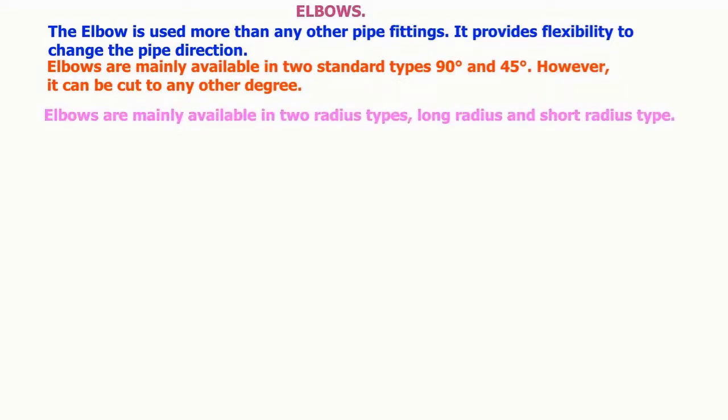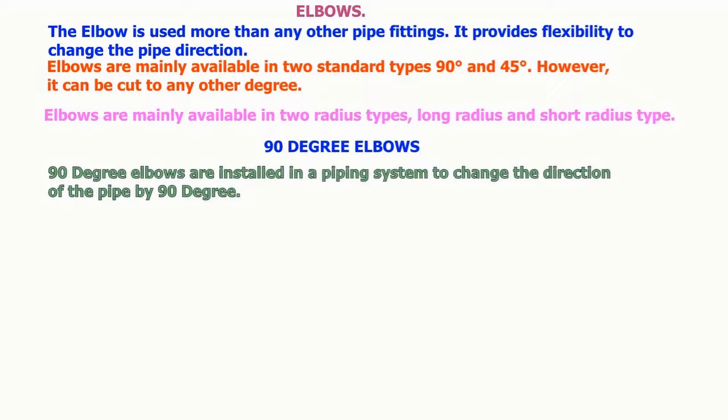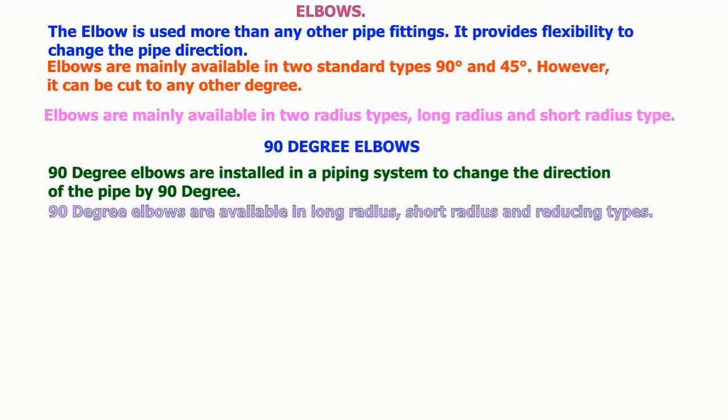90 degree elbows are installed in a piping system to change the direction of the pipe by 90 degrees. 90 degree elbows are available in long radius, short radius, and reducing types.